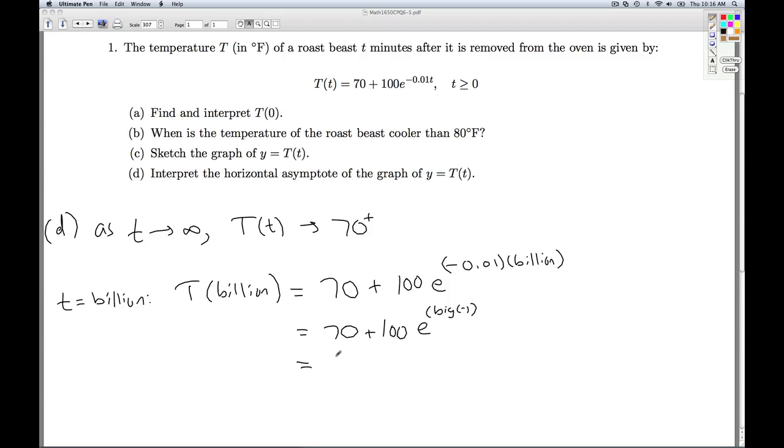Well, what's a negative do in the exponent? Well, flips it into the denominator. So this would be 100 over e to a big positive.